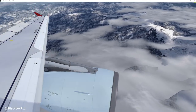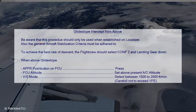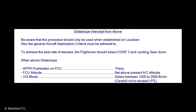The question arises: what do you need to do in such a case? As always, there is a procedure for this. There are certain limitations — one of them is that you need to be established on the localizer in order to do this procedure, and of course the general aircraft stabilization criteria must also be adhered to. Once you realize that you are above the glide slope, you should reduce the airspeed and get into config 2 and landing gear down — that will give you the best rate of descent in order to capture the glide slope from above.